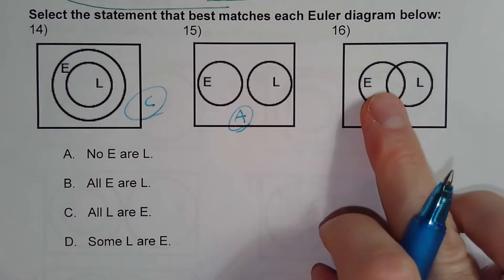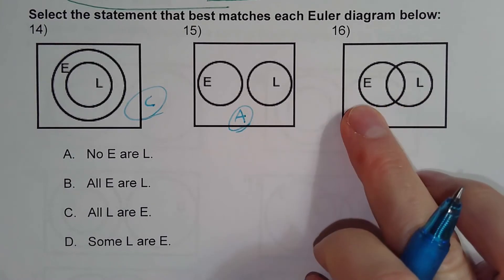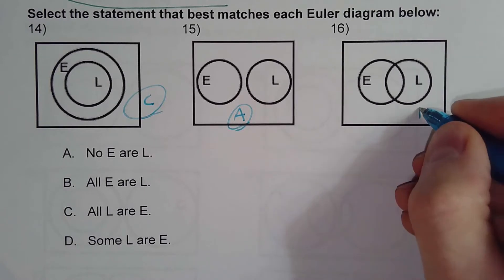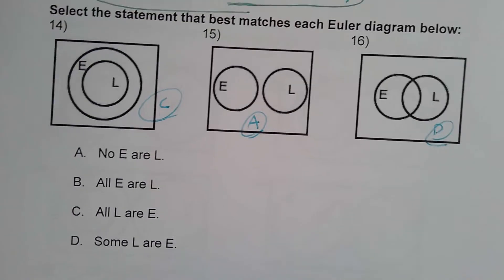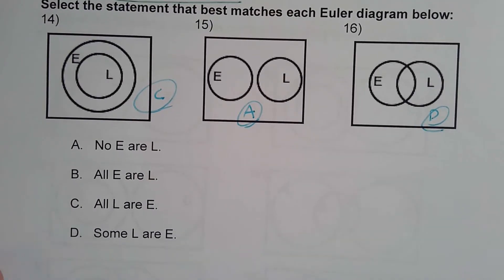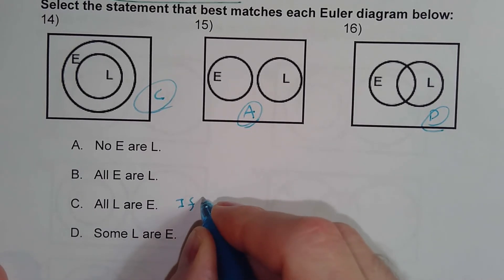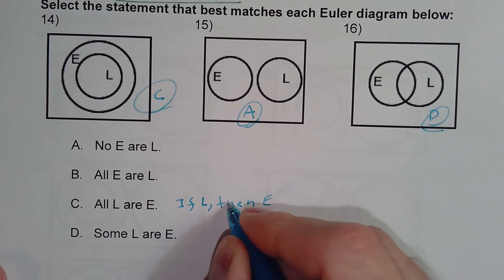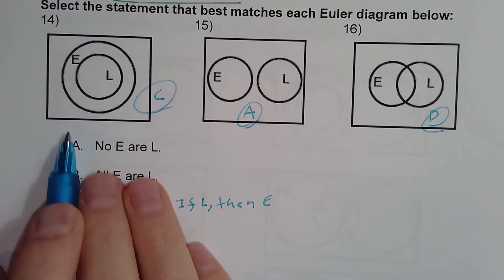Here there is some overlap, so I can say 'some E are L' or 'some L are E,' which matches statement D. Keep in mind we could have also said 'if-then' for number 14 — if L then E would also match that diagram.